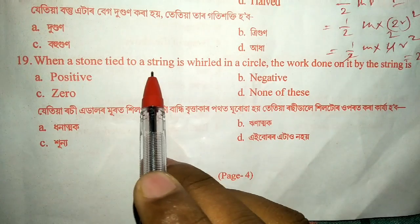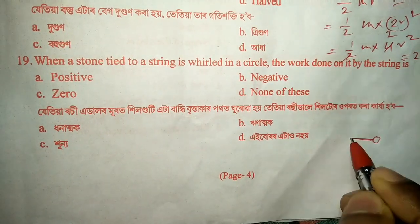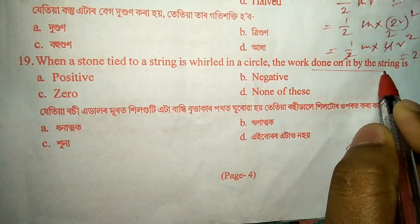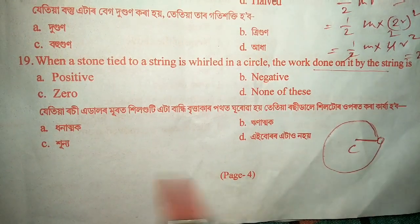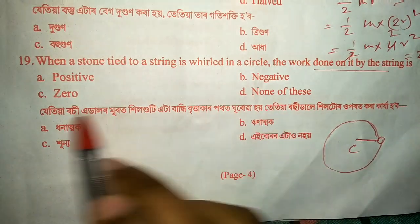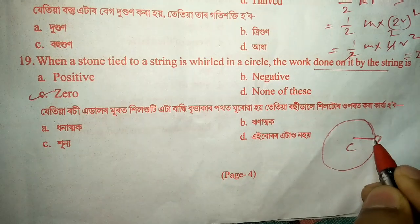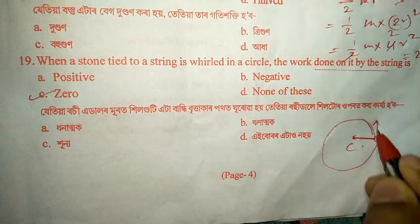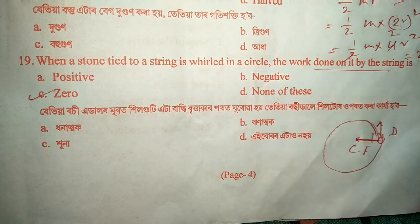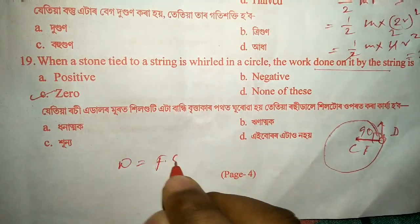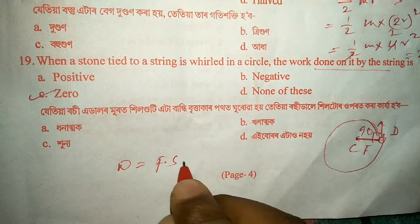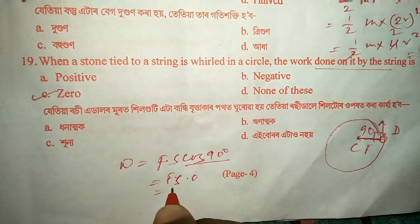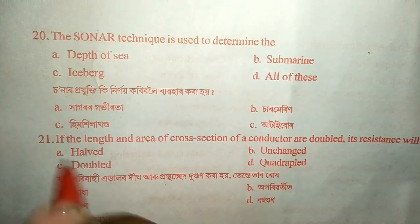Question number nineteen: a stone is tied to a string and revolved in a circle. The work done by the tension on the stone — is it positive, negative, zero, or none of these? The answer is zero. The centripetal force acts toward the center, while displacement is always in the tangential direction. The angle between force and displacement is 90 degrees. Using the work done formula W equals F·s·cosθ, cos 90 degrees equals zero, so the work done is zero. The answer is option C.